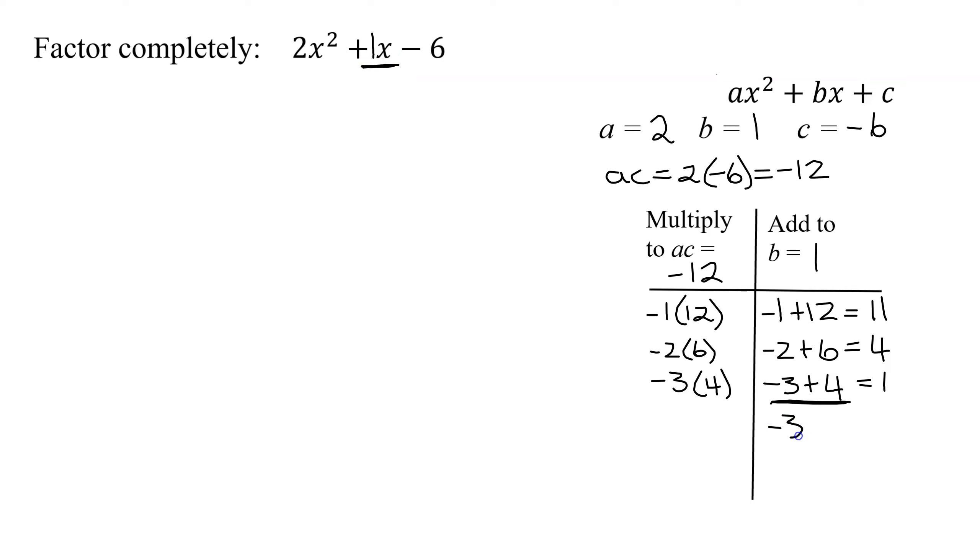That's what I'm going to break my middle term down into. Instead of 1x, I'm going to write negative 3x plus 4x using these two numbers here. So my problem is going to become 2x squared, instead of the 1x, I have negative 3x plus 4x minus 6. So I've just rewritten that middle term.